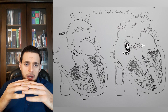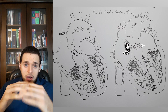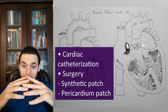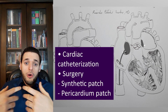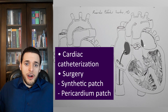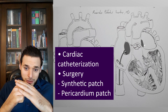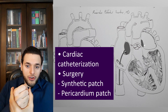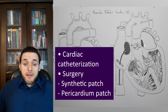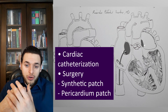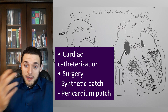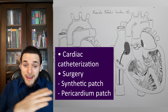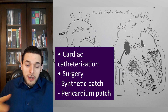Small atrial septal defects may close on their own during childhood and not require intervention. Should that not be the case, or should the defect be large, cardiac catheterization or surgery will likely be necessary for placement of a patch — synthetic or pericardial — in the hole between both atria to occlude it. There is some debate regarding whether it is necessary to close small atrial septal defects in an adult, given the lifelong risk of paradoxical embolism versus the procedure risks, though low-risk percutaneous procedures tend to lower the threshold for recommending intervention.